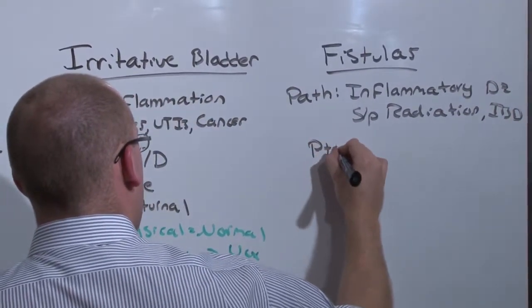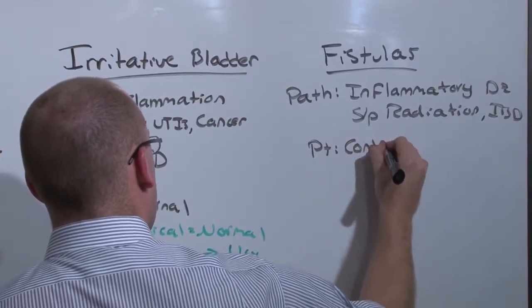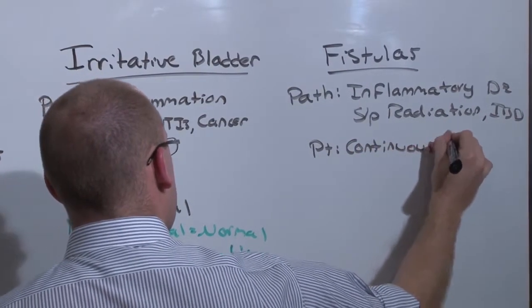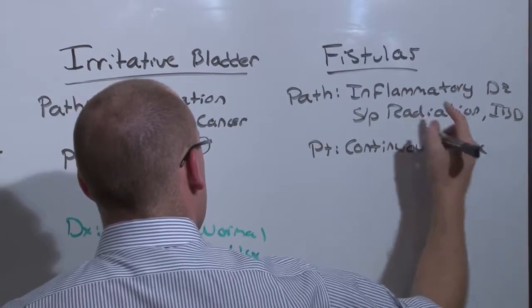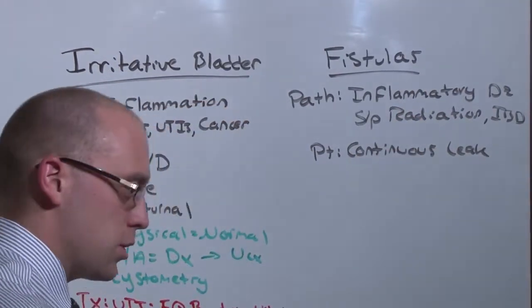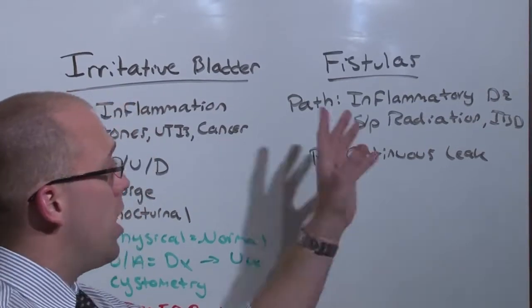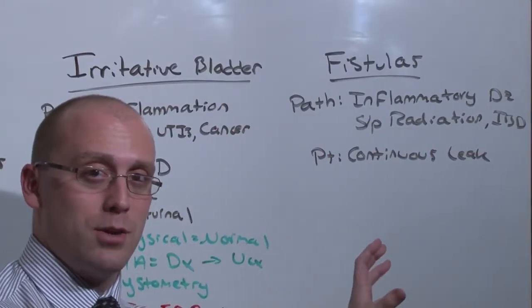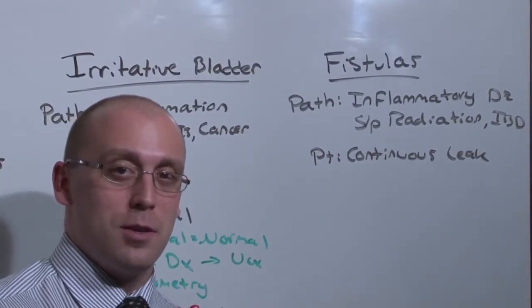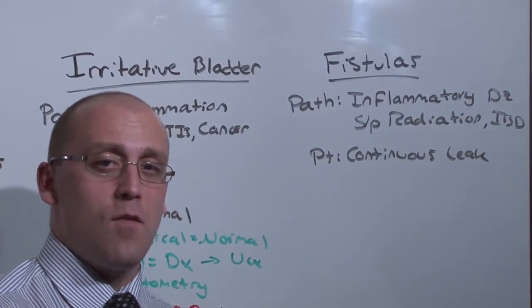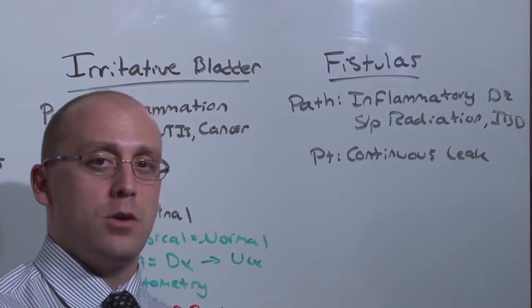The patient is going to have a continuous leak. And they have a continuous leak because a fistula is an epithelialized connection between one organ and another. In this case, you will have a connection between the bladder and anything else. It can be from the bladder to the skin, from the bladder to the rectum, or from the bladder to the vagina.